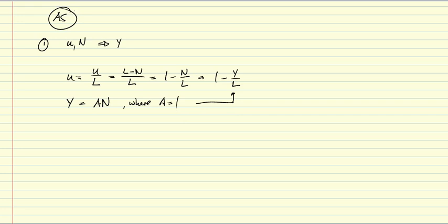So there's an inverse relationship between the unemployment rate and output. For the wage setting relationship, W is equal to PE times F of U, Z. That means we can write F in terms of Y, namely 1 minus Y over L, Z.